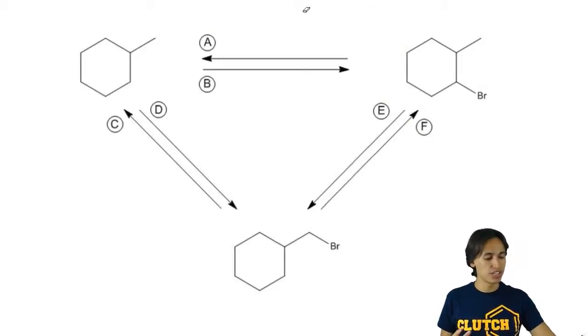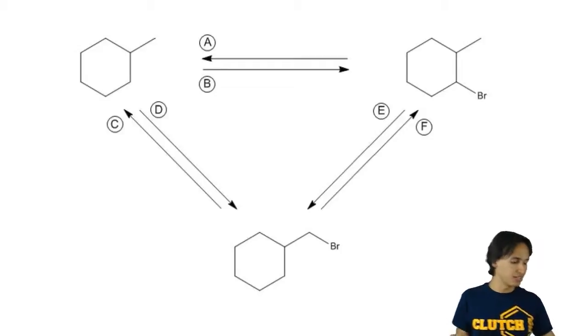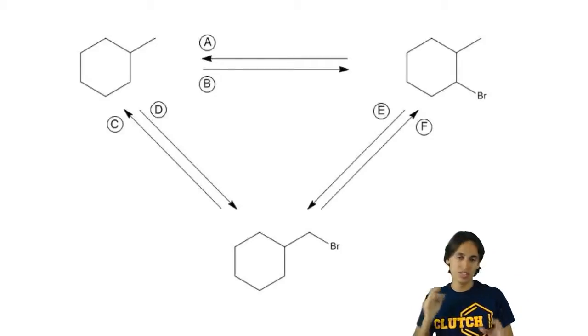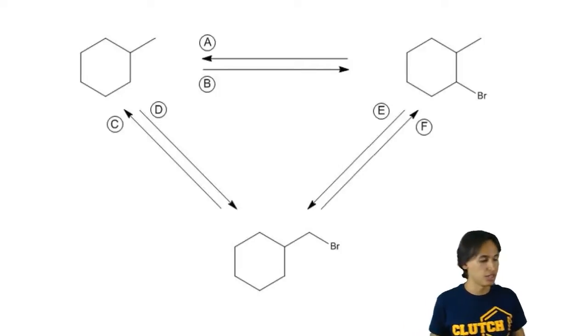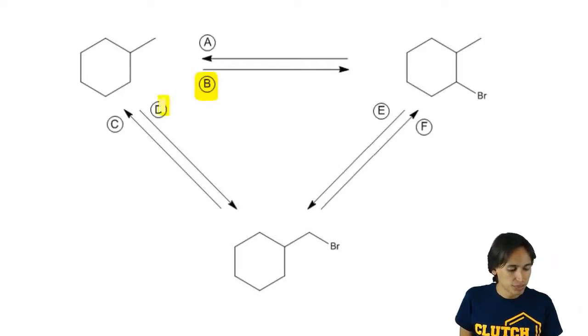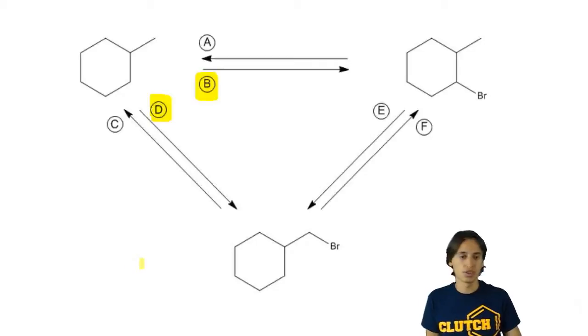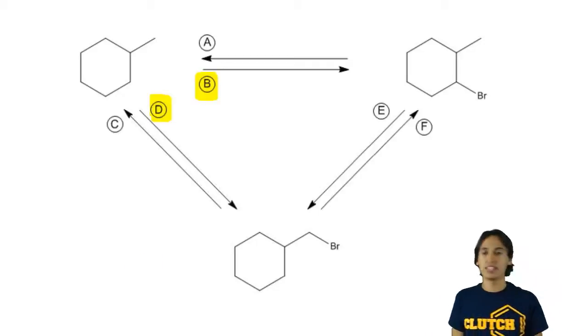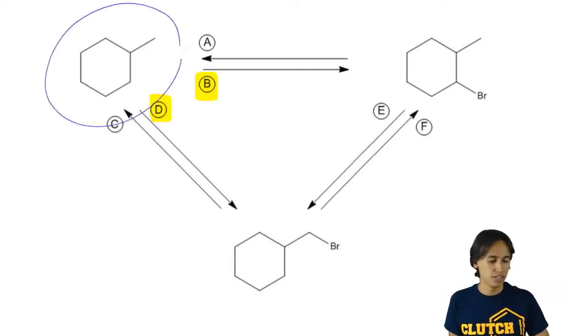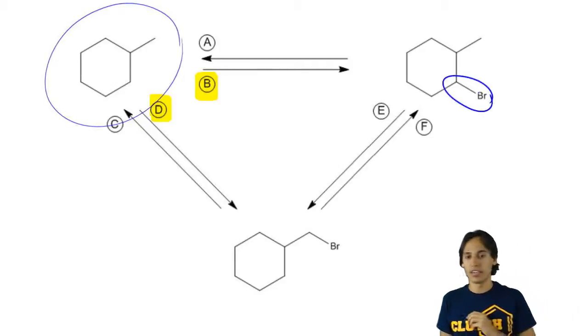Now what I want you guys to do in particular is focus on I think two of the easier ones. This is not the easiest exercise here. It's a little bit tricky. But I want you guys to focus on B and D and tell me what those reagents are because B is basically taking – it's not that bad – it's taking this alkane and putting an alkyl halide right there.